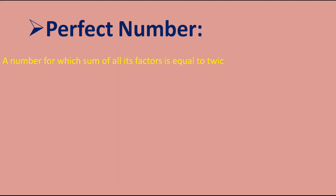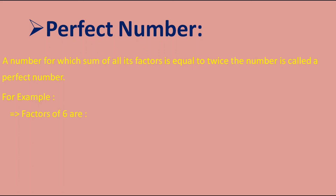Next concept is perfect number. A number for which the sum of all its factors is equal to twice the number is called a perfect number. Let's understand by example. The factors of 6 are 1, 2, 3, and 6. Adding them: 1 + 2 + 3 + 6 = 12, and double of 6 is also 12. So 6 is a perfect number.